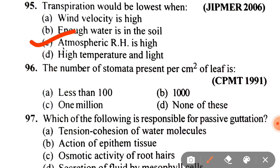Next: the number of stomata present per centimeter square of leaf is A. Less than 100, B. One thousand, C. One million, D. None. The correct answer is B — one thousand.